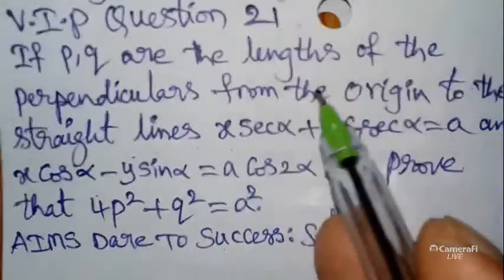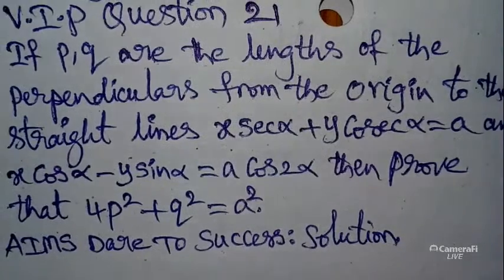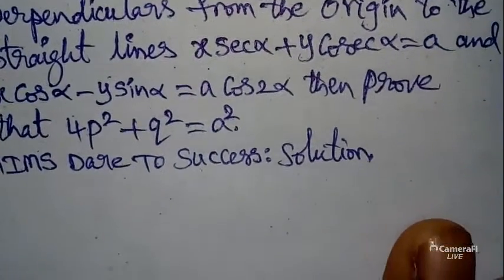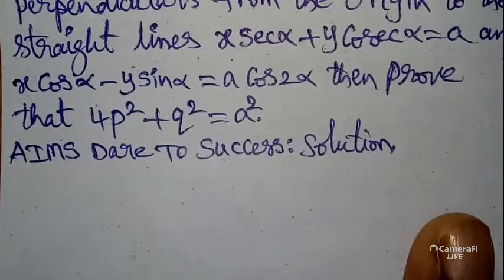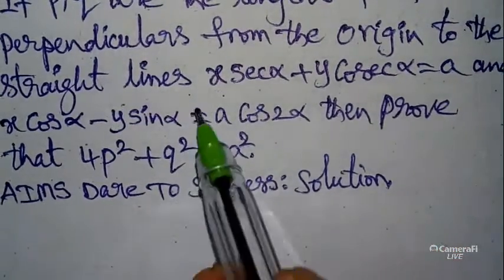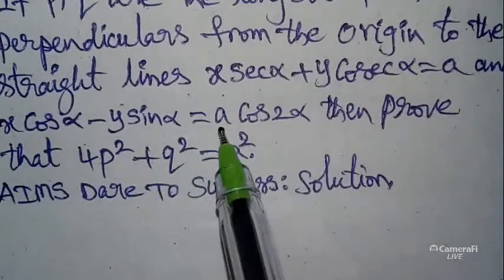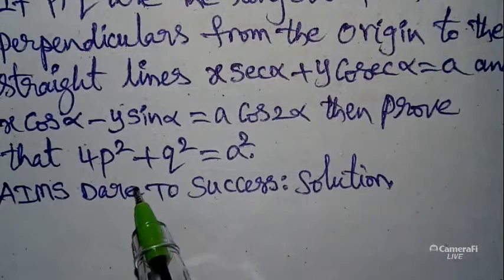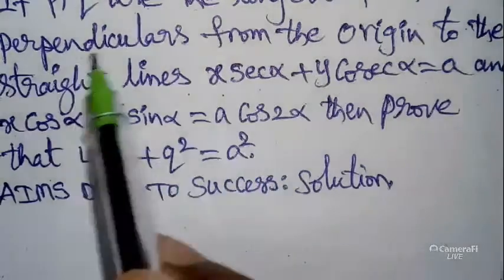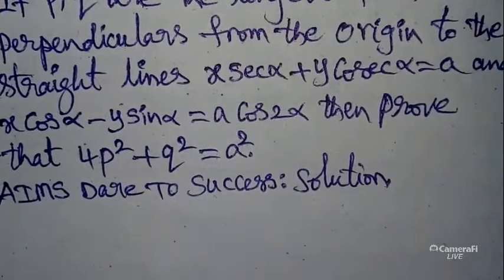So today we can start. P and Q are the lengths of the perpendicular from the origin to the straight lines. Here we can remember and use the perpendicular distance formula. So to prove that 4P² + Q² = a², the one and only formula we use is the perpendicular distance formula.